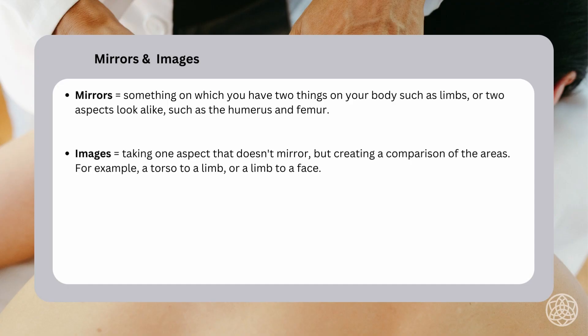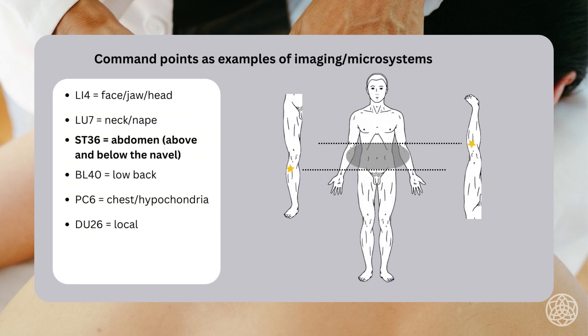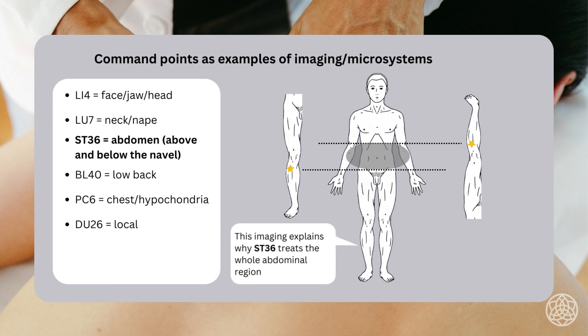We're going to open up the body as a palette that we can work with, using imaging across the body. You'll be able to see how the limbs reflect aspects of the torso or other limbs. It'll open up the ability for you to use points to treat certain areas or conditions in a vastly different way — and you're going to get results that become a lot more effective and quick in treatment.